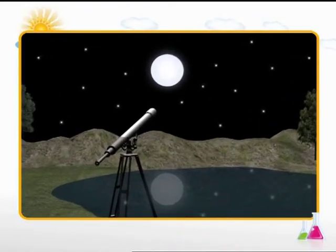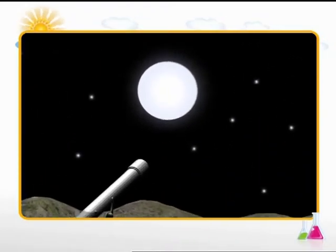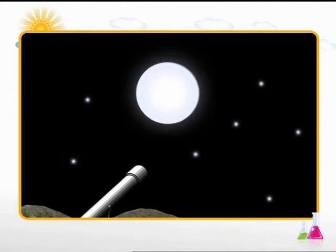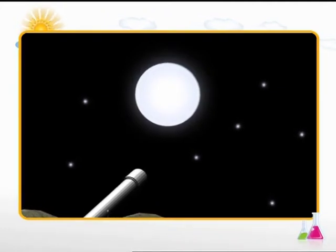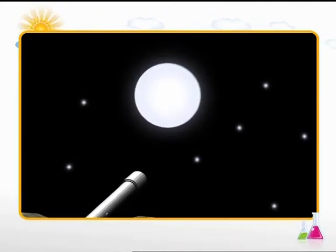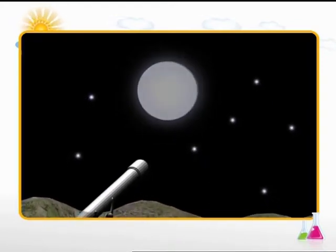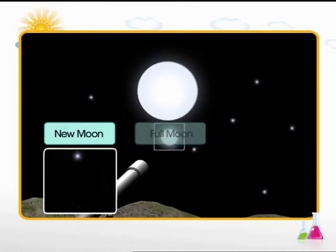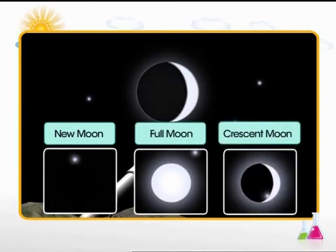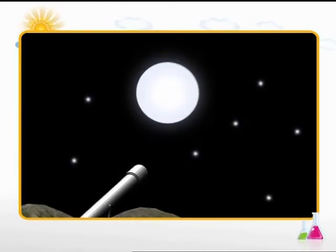The moon is also visible in the night sky. It appears to change shape all along the month. The changing shapes of the moon are called its phases. Some of the phases are new moon, full moon, and crescent moon.